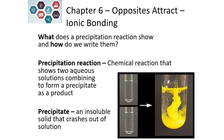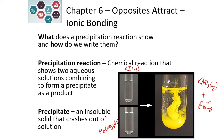In this example, we have potassium iodide dissolved in solution and lead nitrate. When these combine, we get two new products: potassium nitrate, which is always soluble according to our solubility rules and remains as ions in solution, and lead iodide, which is not soluble. Lead iodide is the yellow solid you see forming from the combination of two clear solutions.